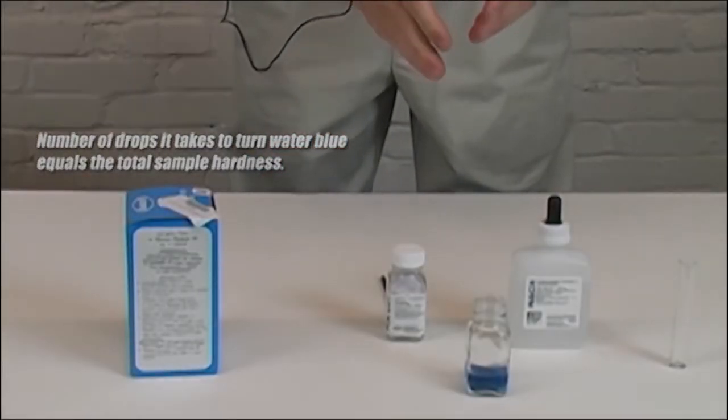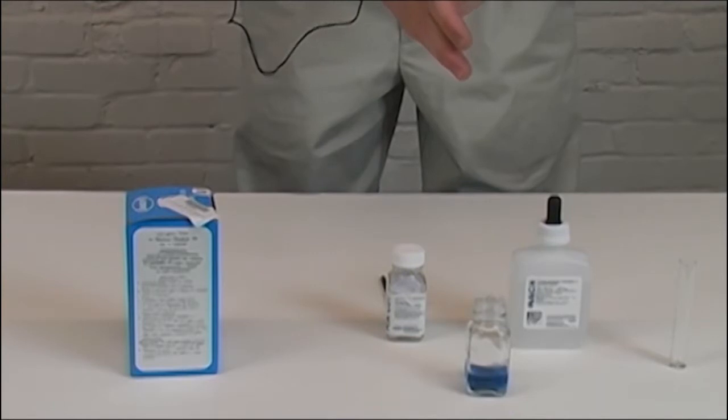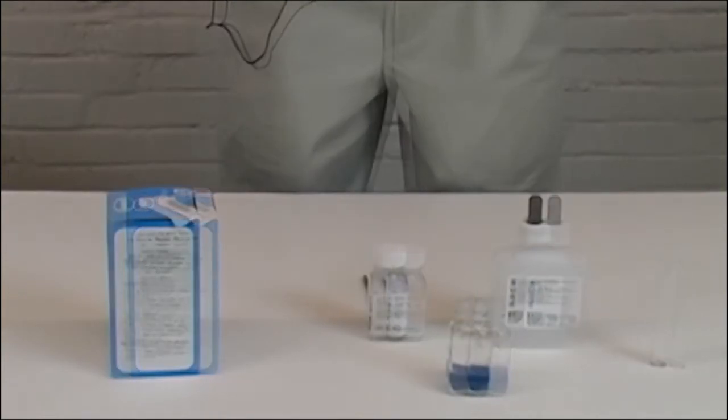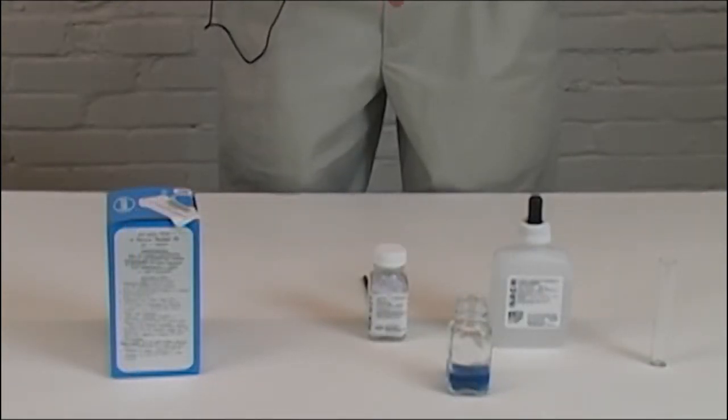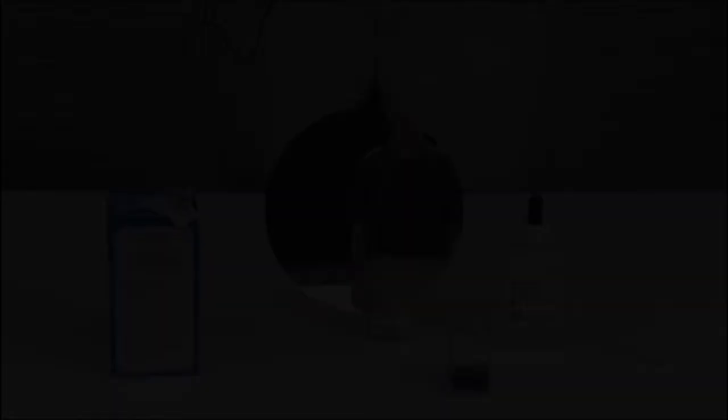So it took us seven drops for this to turn to the blue color and basically seven drops means seven grains of hardness. Every drop counts as one grain of hardness. Again, another good reason to do this test. It gives you an idea of where you're at as far as your water quality and also how much you're wasting on your soaps to try to get it to the level of foam and cleaning that you're looking for.